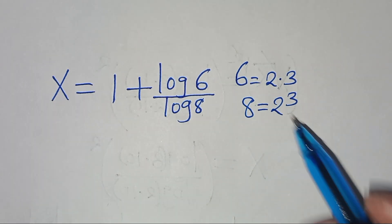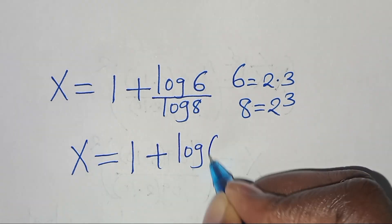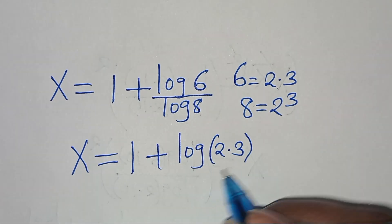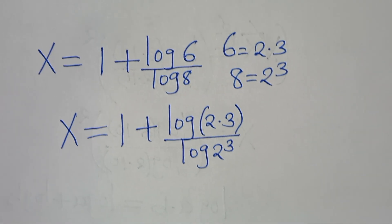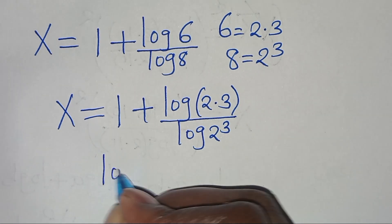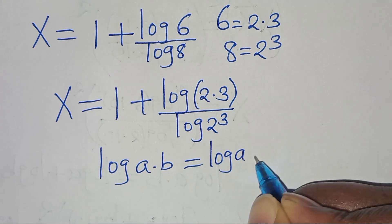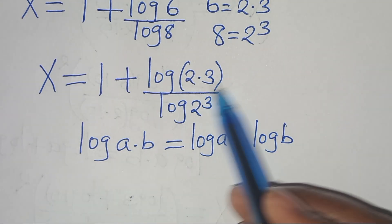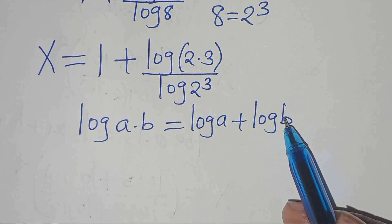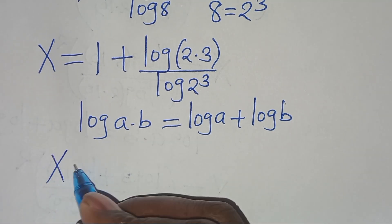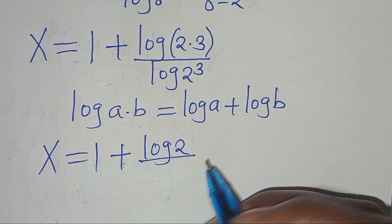Substituting, x equals 1 plus log(2 × 3) divided by log(2³). We note that log(2 × 3) is in the form log(a × b), which equals log(a) + log(b). Applying this property, x equals 1 plus log(2) plus log(3), all divided by log(2³), which becomes 3·log(2).